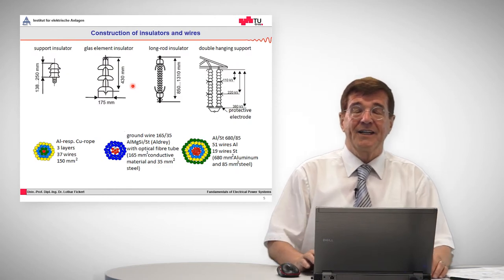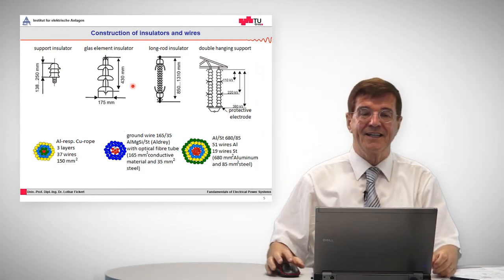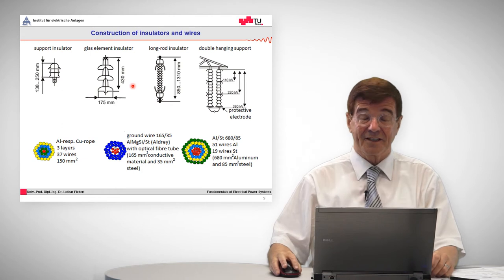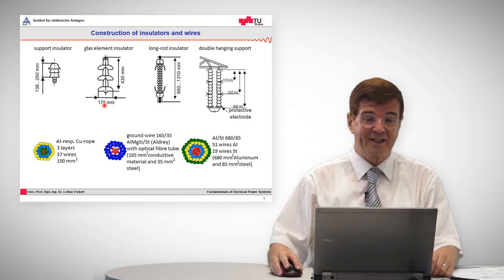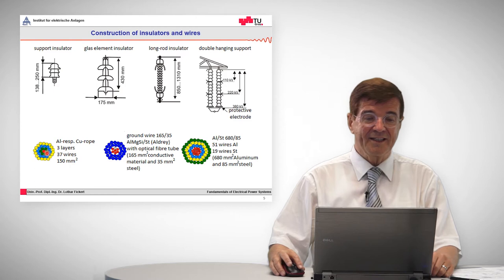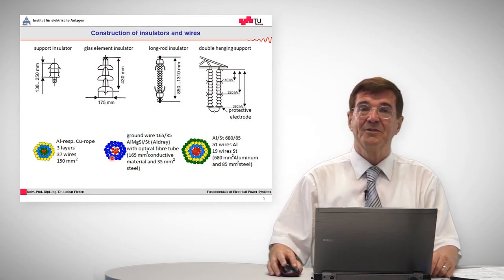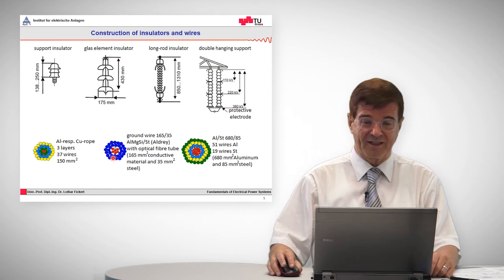Such an overhead line is constructed from steel towers. From the steel towers we have hanging down these insulators, and at the bottom of the insulators there are these wires. For the wires it is important to note that the core of all overhead lines is constructed of iron cables and iron wires because they give mechanical sustainability, and around it we have the conducting material which is usually aluminum.